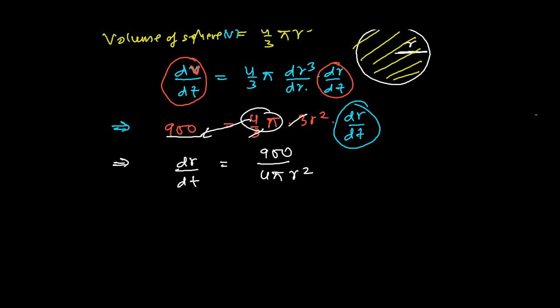So rate of increasing of the radius when radius is 15 centimeter, what is the rate of increase of that radius of the sphere? So it's 900, 4 pi and this is r square, so this will be now 15 square.